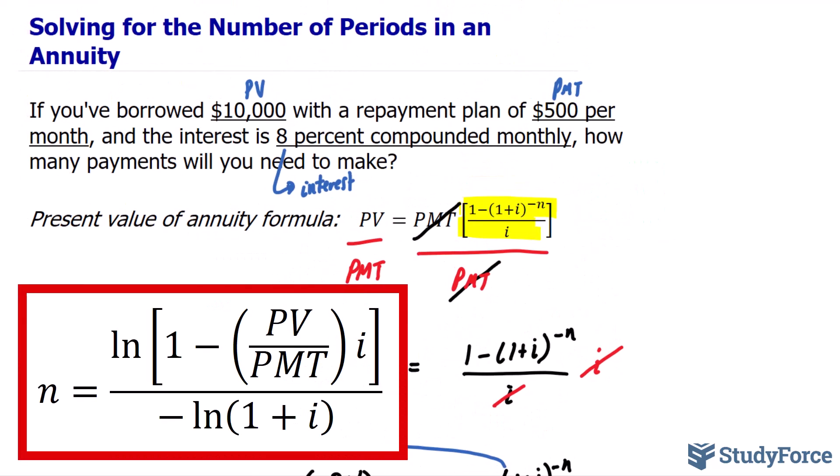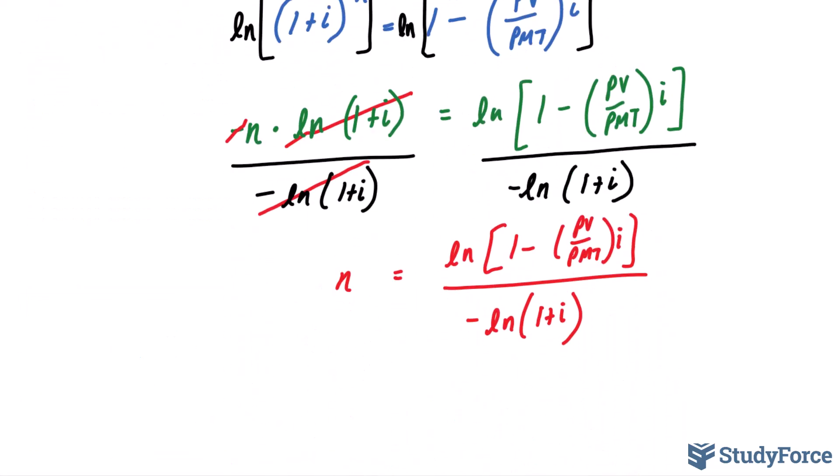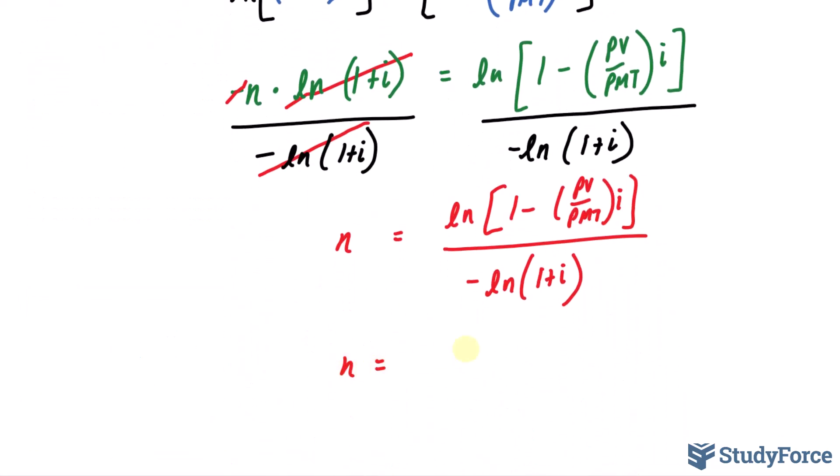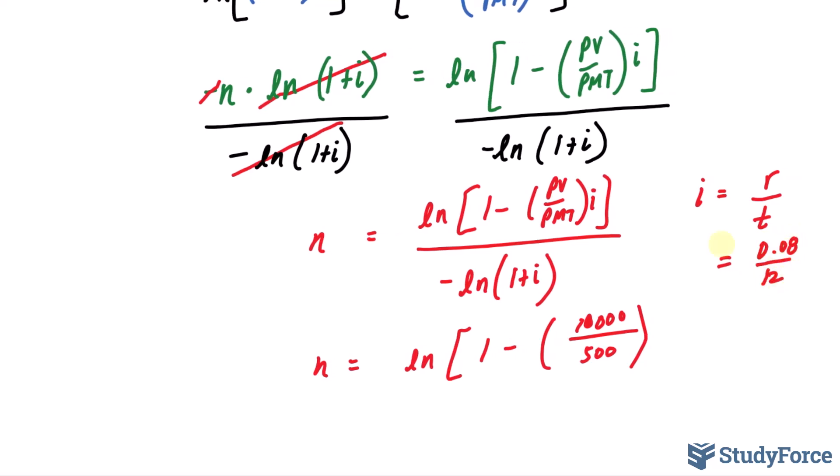We are now ready to substitute those values in where they belong, the 10,500 and 8%. Let's go ahead and do that. n is equal to ln, and in brackets, 1 take away. Our present value is 10,000, that was the borrowed amount. Over 500, which was the monthly payments, multiplied to i. Now remember, i is equal to the nominal rate divided by t, which is the number of compounding periods per year. For us, that's monthly, so we divide our nominal rate by 12. So we have 0.08 divided by 12, and that will be placed in for i.